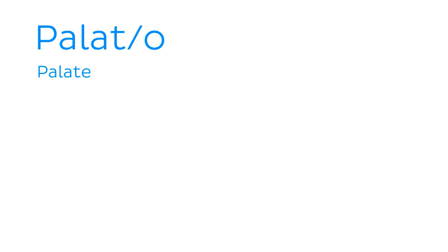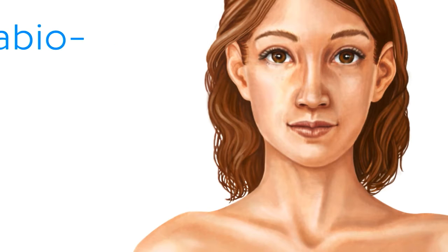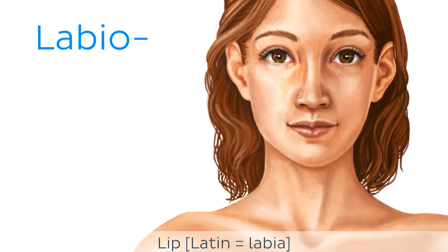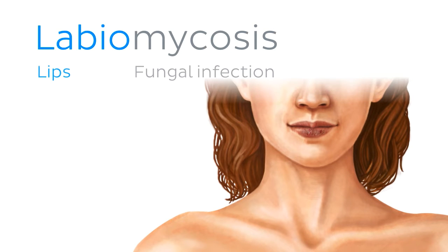'Palat' or 'palato' with the O at the end refers to the palate of the mouth, as in palatoschisis, a clinical term for a cleft palate. And finally, we have two word roots which refer to the lips of the mouth. The first of these is 'labio', which comes from the Latin 'labia', as in lip, as we have in labiomycosis.